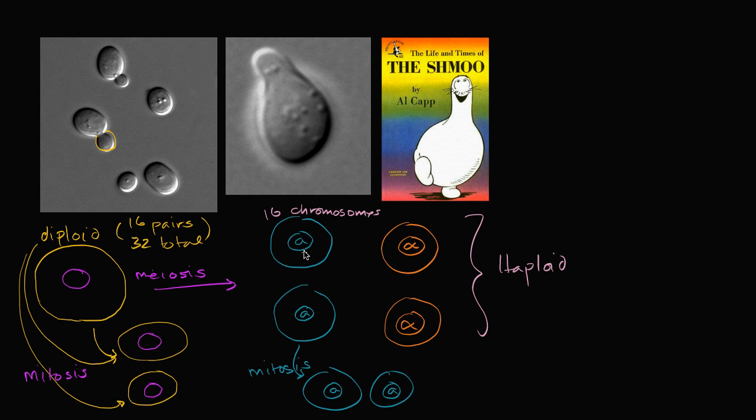So this type A right over here, it's going to produce the type A mating factors, and it's going to release them into the space around it. So it's releasing those type A mating factors. And then the alphas are going to release the type alpha mating factors. So I'll do that in this orange-ish brown color. So they're going to release the type alpha mating factors.